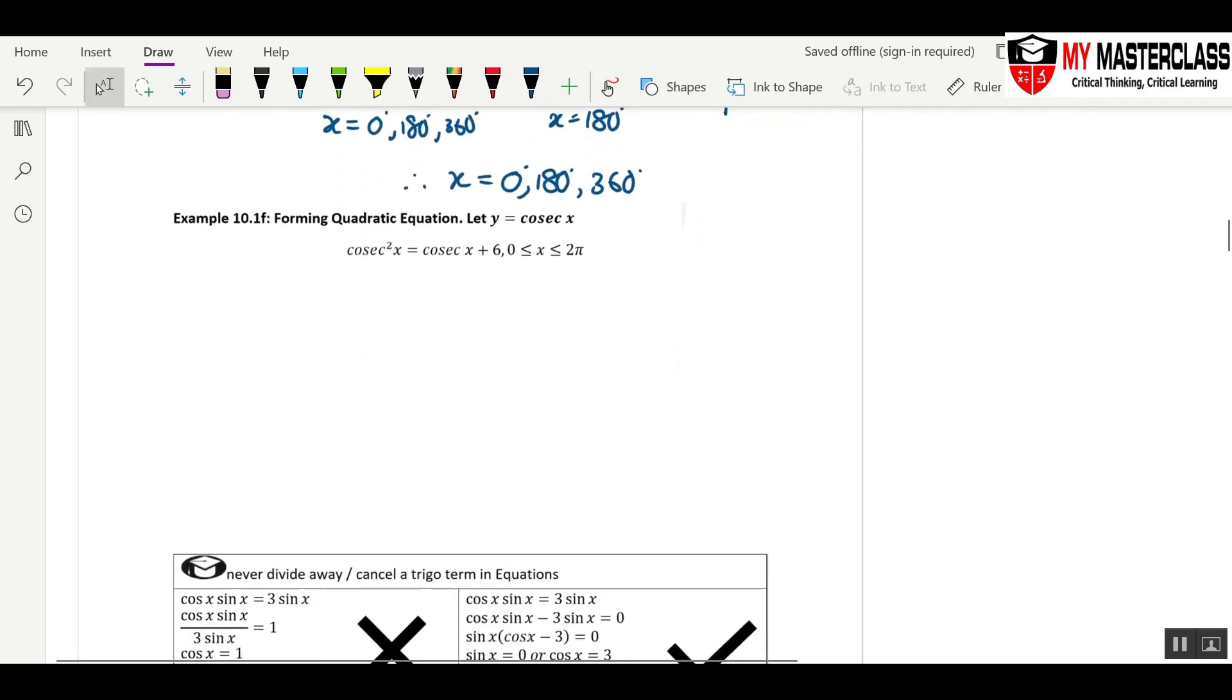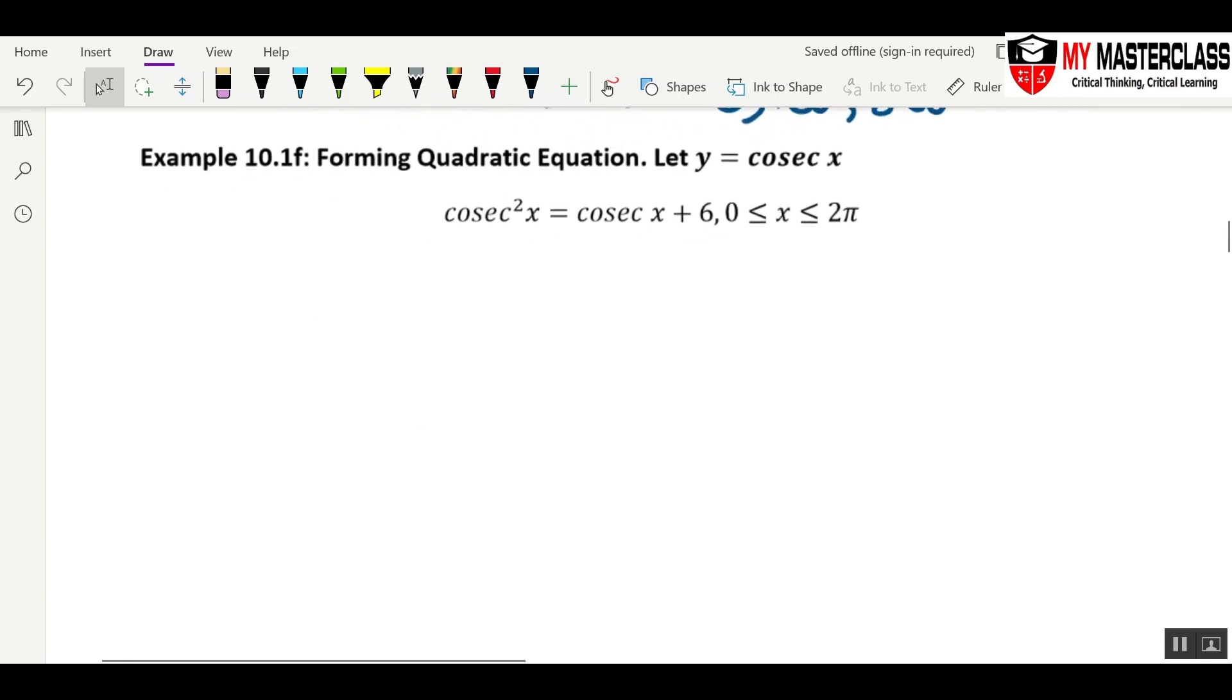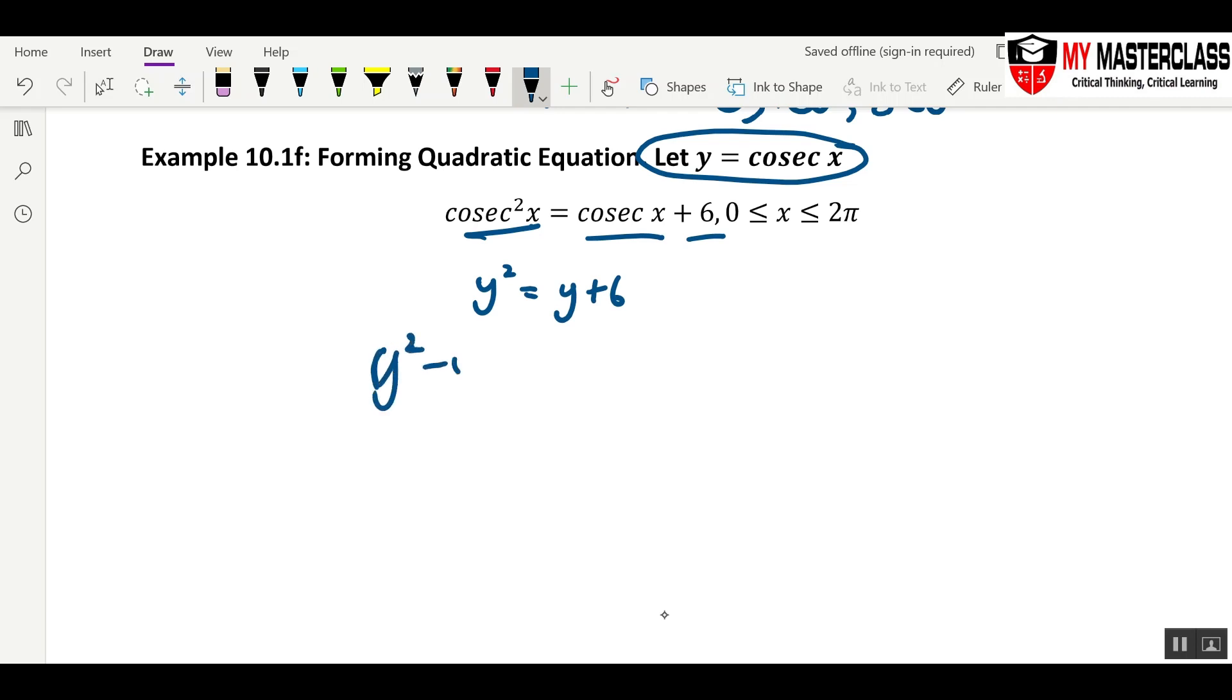Next one is if you see that there is three terms: 1, 2, 3. Very obvious, it's going to be a quadratic equation. Let y equals to cosecant x. You will have y square equals to y plus 6. y square minus y minus 6 equals to 0.